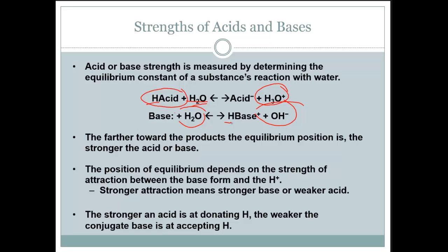The farther towards the product the equilibrium position is, the stronger the acid or the base. The position of equilibrium depends on the strength of the attraction between the base form and the H+. The stronger attraction means a stronger base or a weaker acid.